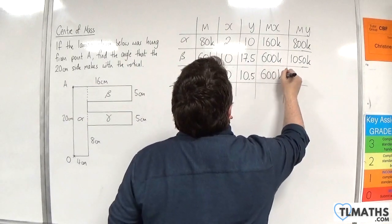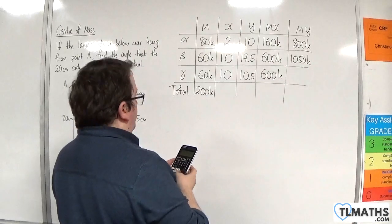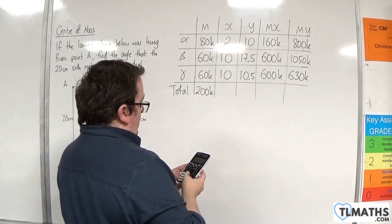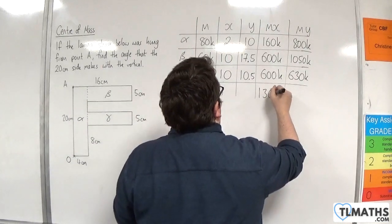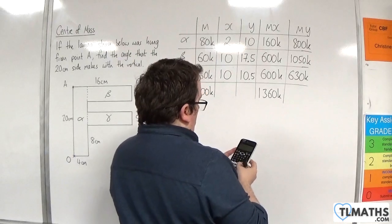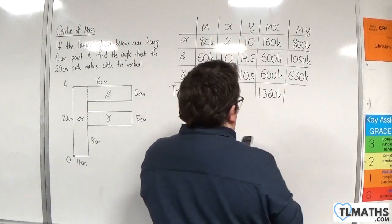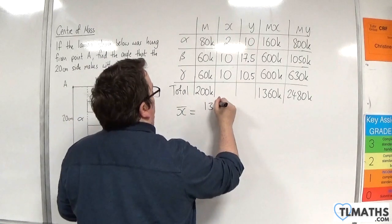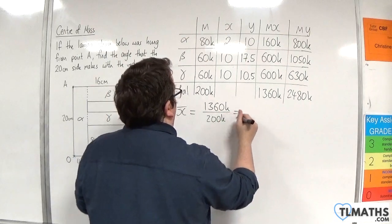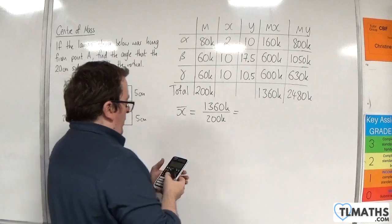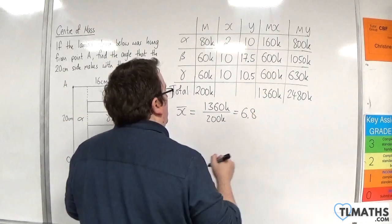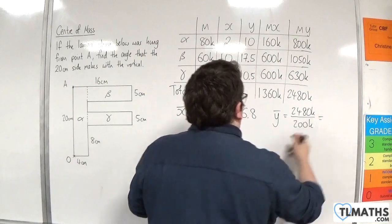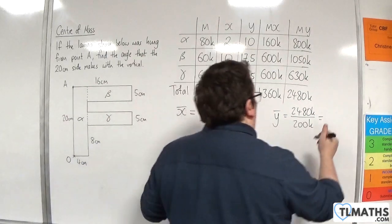Then 600k, and then 60 times 10.5 is 630k. So we've got 160 plus 600 plus 600, so 1360k. So the average of the x's is 1360k divided by 200k, which is 6.8. And the average for the y's is 2480k divided by 200k, so 12.4.